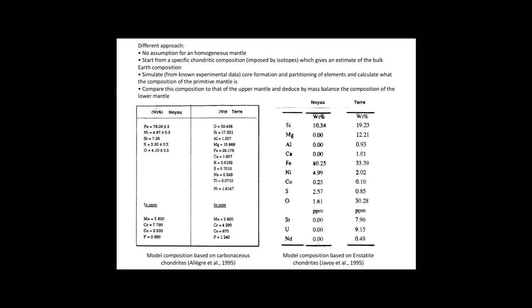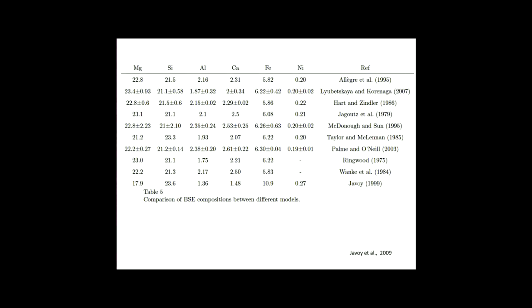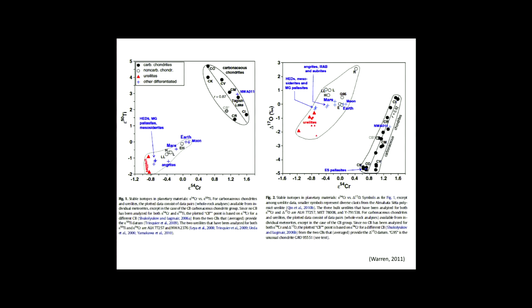A comparison paper by Javoy shows his model results alongside other models. The other models, not using enstatite chondrites, give more or less similar results to each other. But the enstatite chondrite model is very different: the Earth contains much less magnesium, much more iron, and more silicon. This is a real question, and over time it has become more obvious that isotopic composition differences provide a very strong constraint. It's not only oxygen isotopes — all isotopes measurable today show the Earth is closest in isotopic composition to enstatite chondrites.